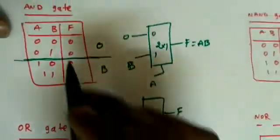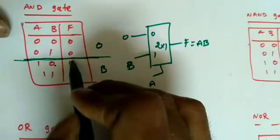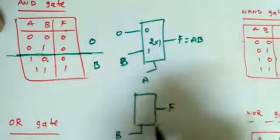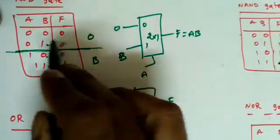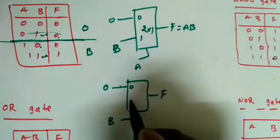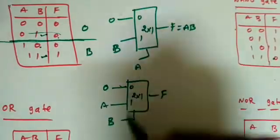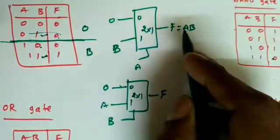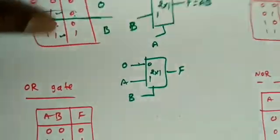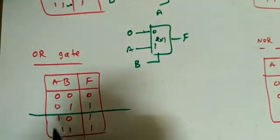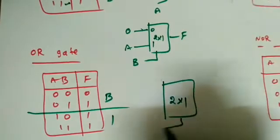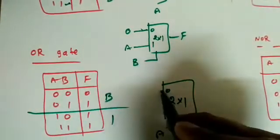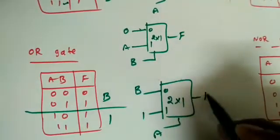Alternatively, if we select B as the select line for AND: when B=0, F is always 0 so data input is 0; when B=1, F follows A so data input is A. This also gives F = A·B. For the OR gate with select line A: when A=0, F follows B so data input is B; when A=1, F is always 1 so data input is 1. This gives F = A + B.